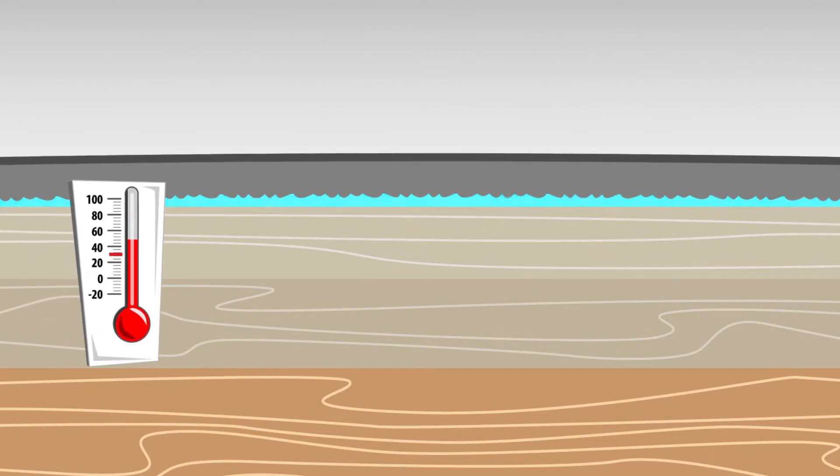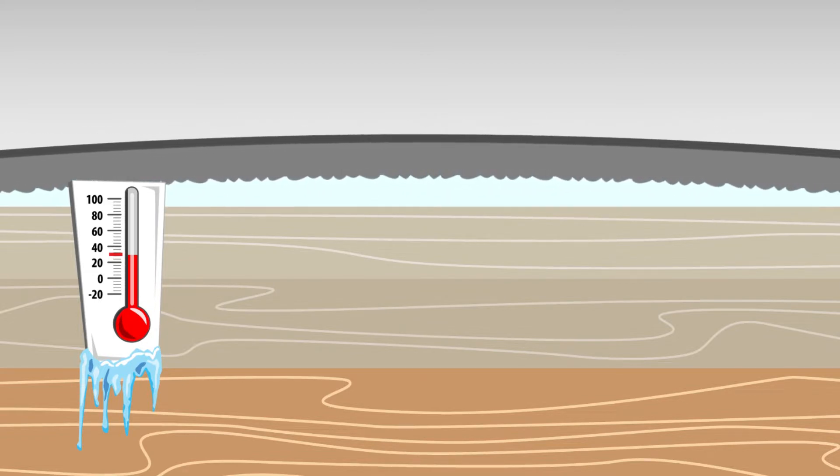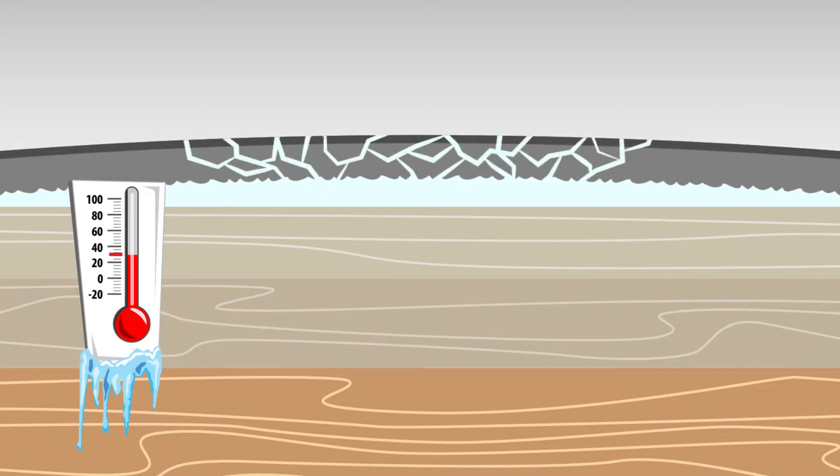When water freezes, it expands, and when it expands, it takes up more space underneath the pavement, and the pavement in itself will expand, bend, and crack, which weakens the material of the pavement.